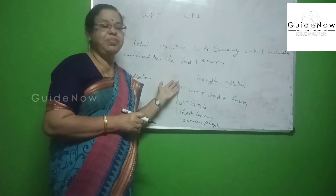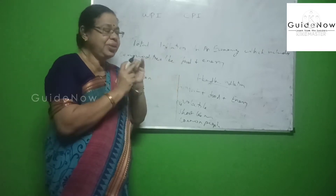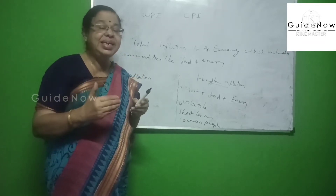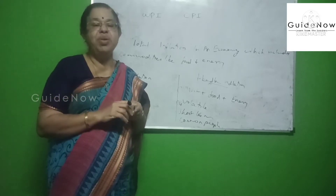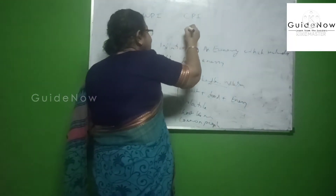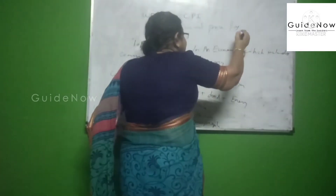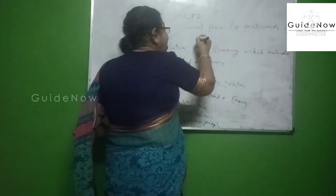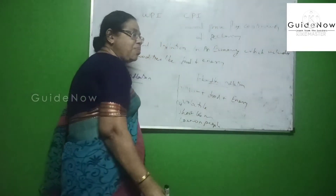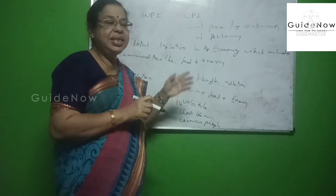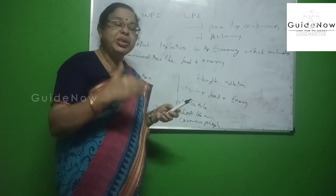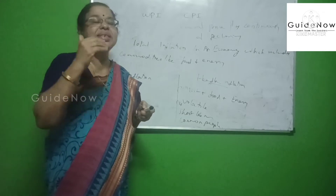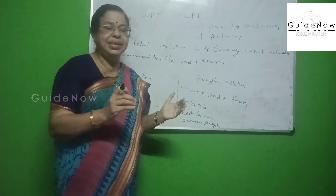First, what is meant by inflation? Inflation is defined as the general price level increasing continuously and value of money declining. General price level is increasing — the price of the majority of all commodities is increasing. At the same time, the value of money is declining. Or, continuous increase in the prices — that is equal to inflation.